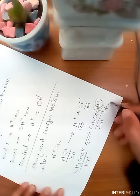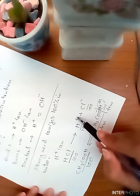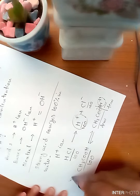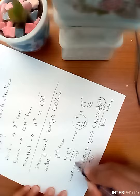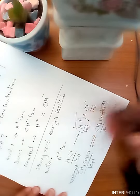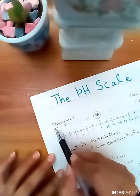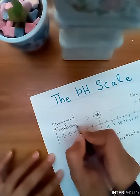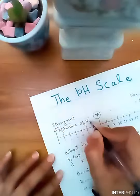So, which acid will have higher concentration of H-positive ions? Strong acid or a weak acid? Obviously, the answer is strong acid. So, strong acids always have higher concentration of H-positive ions.